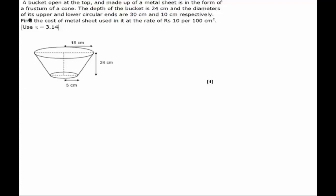Hello students. In this question we are given that a bucket is open at the top and made up of metal sheet is in the form of a frustum of a cone. So it's closed at the bottom but it's open at the top. The depth of the bucket is 24 cm, which is this height, and the diameter of its upper end is 30 cm.